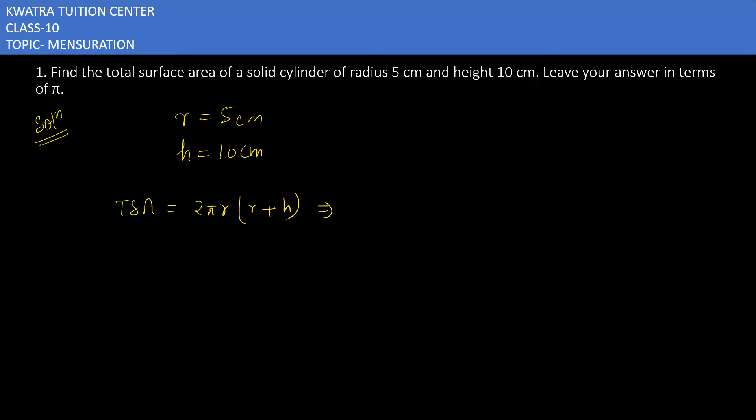We won't substitute the value of π because they are saying to leave your answer in terms of π. So it will be 2 into π into r which is 5, then you have 5 plus 10, so you will get 10π.